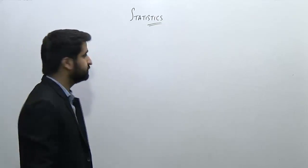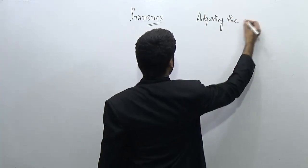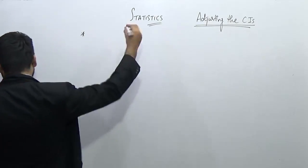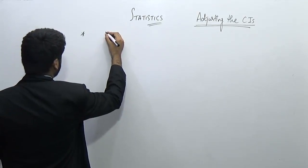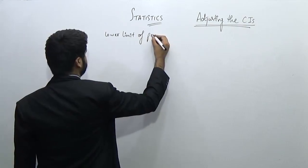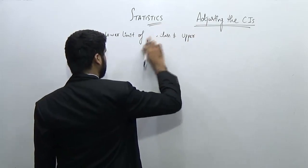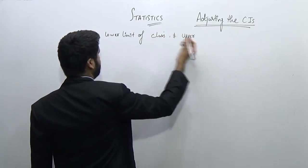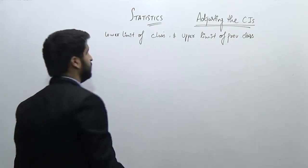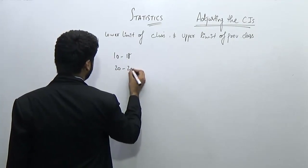How can we convert class intervals into standard class intervals? The topic is adjusting class intervals. The first issue arises when the lower limit of a class is not equal to the upper limit of the previous class. Let's consider an example: 10 to 18, 22 to 28, and 32 to 38.